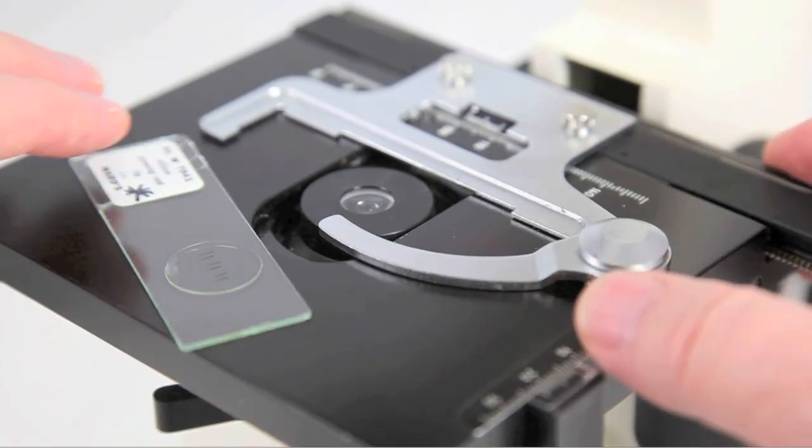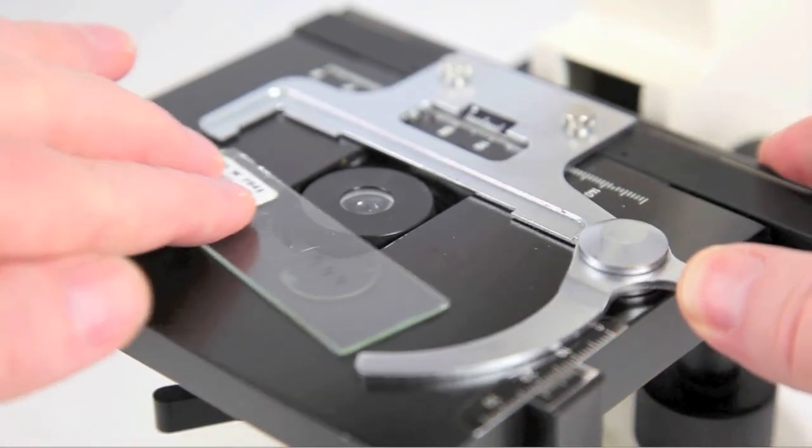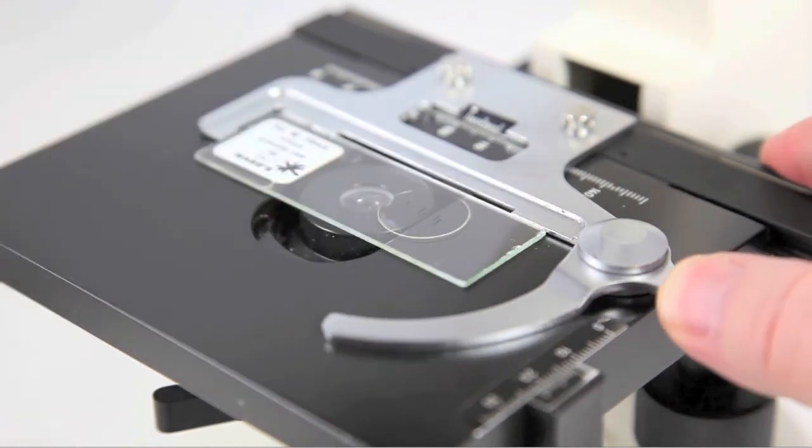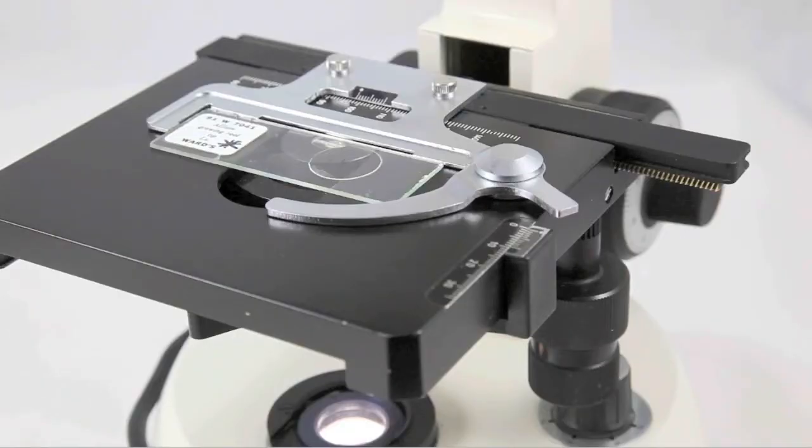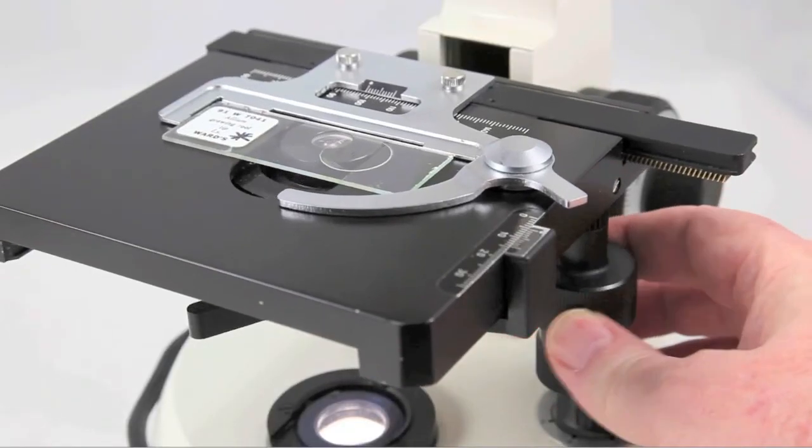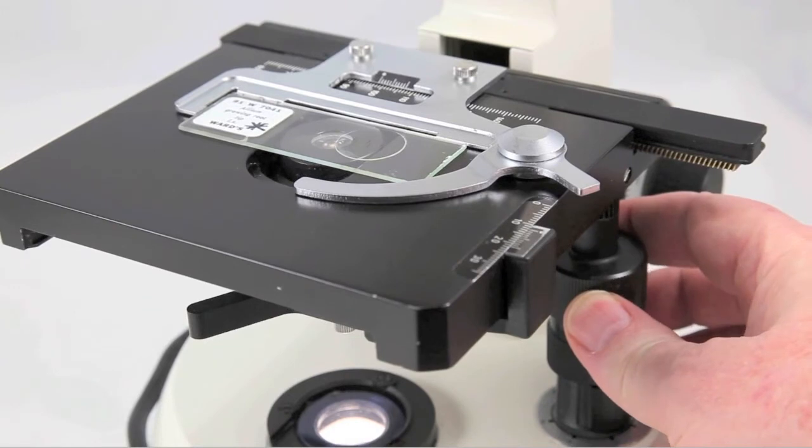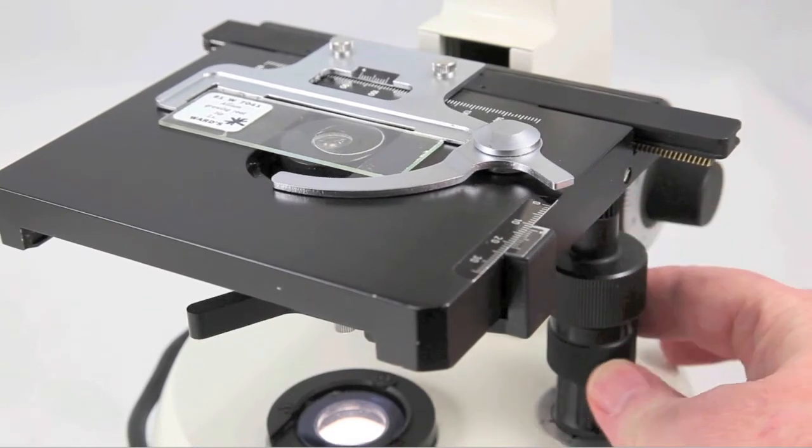Move the arm on the slide holder aside, push the slide into place, then release the arm. This will hold the slide firmly. Center the specimen on the slide over the condenser window using the mechanical stage knobs on the lower right-hand side of the stage.